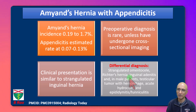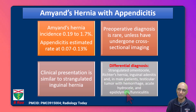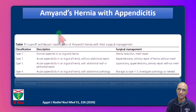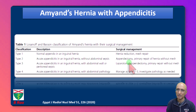Other differential diagnoses include rectus hernia, inguinal adenitis, and in male patients: testicular tumor with hemorrhage, acute hydrocele, epididymitis, or funiculitis. There is a classification system for Amyand's hernia.